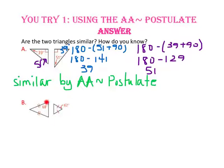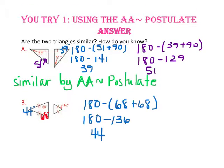In part B, we have two isosceles triangles. Since this triangle's base angle is 68 degrees, we know the other base angle will also be 68 degrees. Let's find the missing vertex angle measure and see if it equals the other vertex angle measure. Since the two vertex angles are not congruent, the two base angles of each triangle will not be congruent either. Therefore, these two triangles are not similar because the corresponding angles are not congruent.